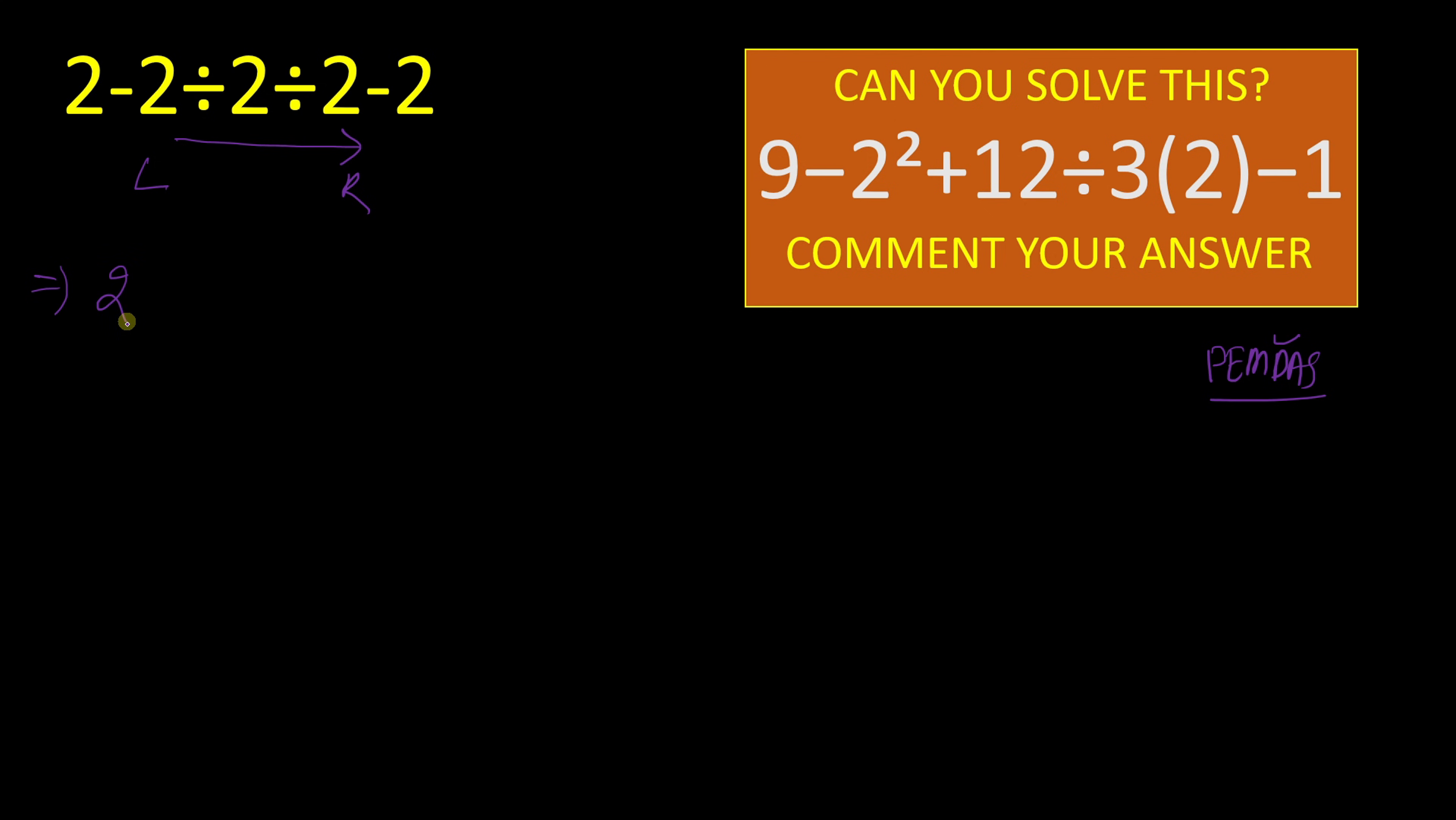So we can write 2 minus. First we will solve for this part. 2 divided by 2 which is 1. We will write 1 divided by 2 minus 2. Now we will go for this division part which be 2 minus 1 by 2 minus 2.